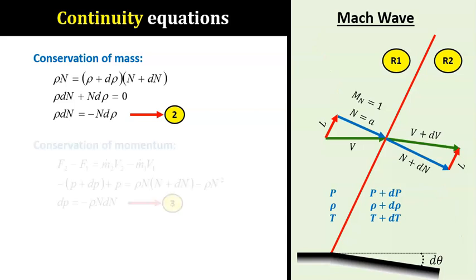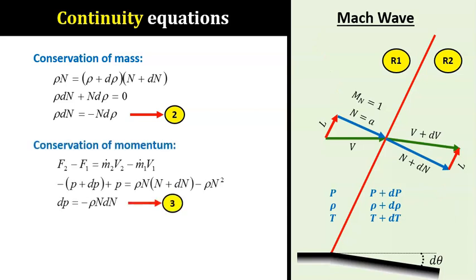For the conservation of momentum, we convert the equation of momentum balance into its differential form. We work out the algebra to simplify the equation into equation 3. Combining equations 2 and 3, we can get rid of the term dn.